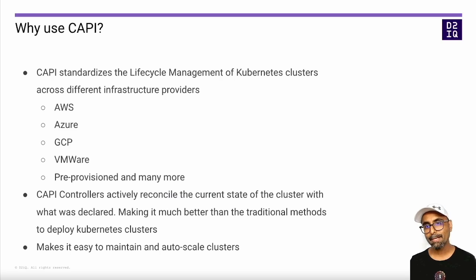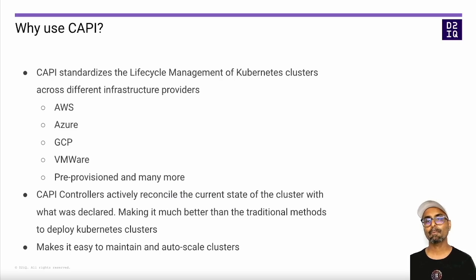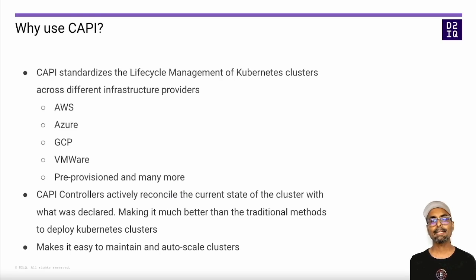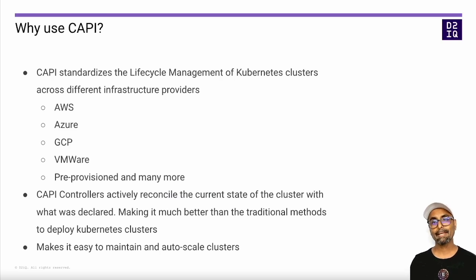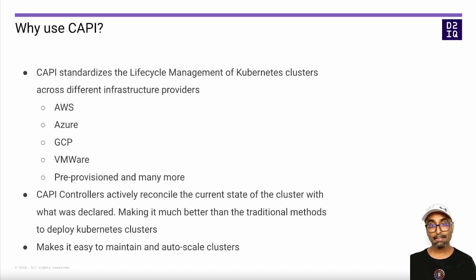There are hundreds of different Kubernetes distributions and installers out there, each with different methods of building the infrastructure and different Kubernetes configurations, resulting in inconsistent behaviors, vendor lock-ins, and maintenance nightmares. With the tremendous momentum Kubernetes adoption has gained, the Kubernetes special interest group named Cluster Lifecycle started an initiative to tackle this complexity. The solution was to build CAPI to standardize the process of building Kubernetes clusters across various infrastructure providers to produce consistent and reliable results.